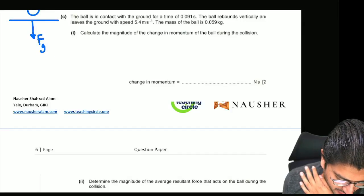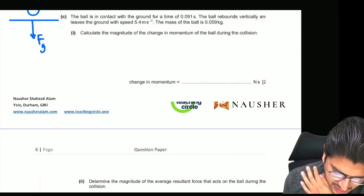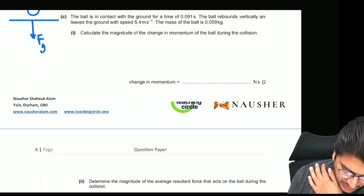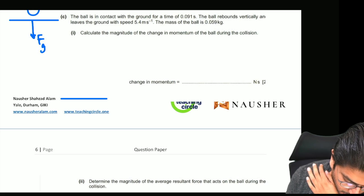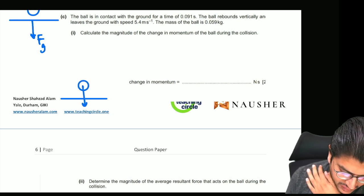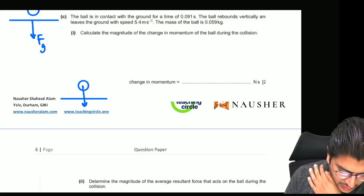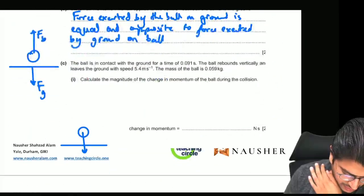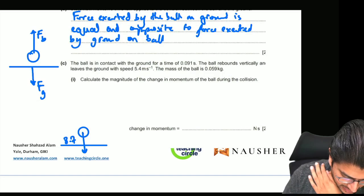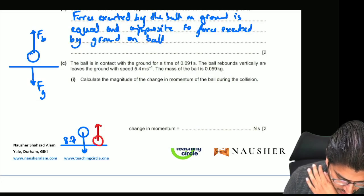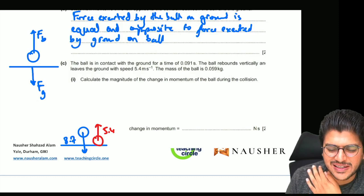Part C: The ball is in contact with the ground for a time of 0.091 seconds and rebounds with a velocity of 5.4 m/s. When you hit the ground, your speed was 8.7 m/s. There's a lot of vectors in this question. When you rebounded and went back up, your speed became 5.4 m/s.